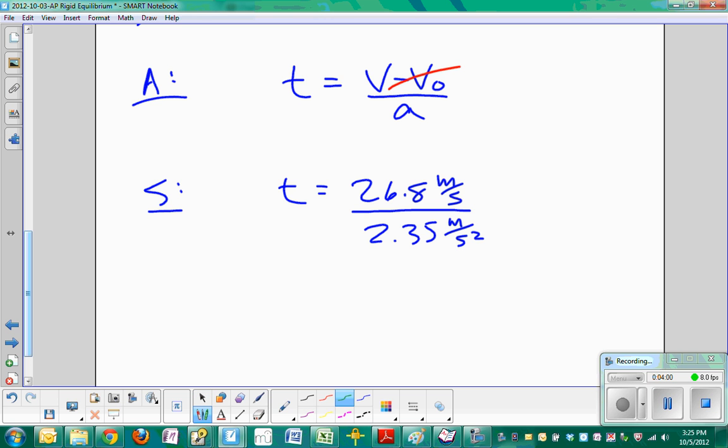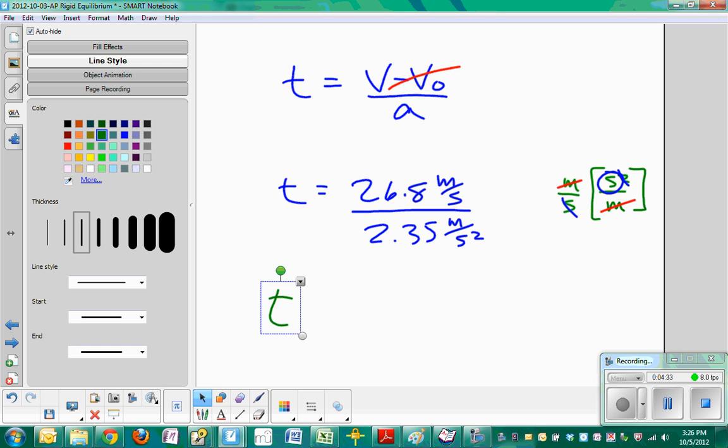Even before we crank out these numbers, let's take a look at a unit analysis. Meters per second divided by meters per second squared. Since that's in the denominator, we will quote, invert, and multiply, which is not really, as you know, actual mathematical operation. You can't find it on your calculator. But what we do end up with is seconds when we cancel all those things out. So we know that we've set this up probably correctly if we have come up with the correct units at the end.